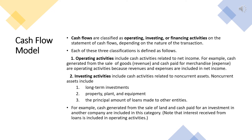First: operating activities. It includes cash activities related to net income. For example, cash generated from the sale of goods — that is revenue — and cash paid for merchandise and expenses are operating activities, because revenues and expenses are included in net income.